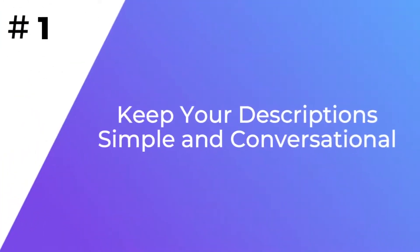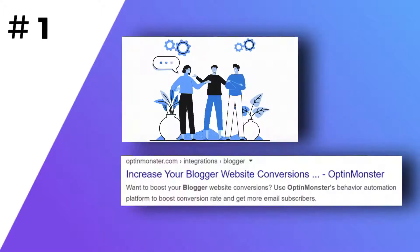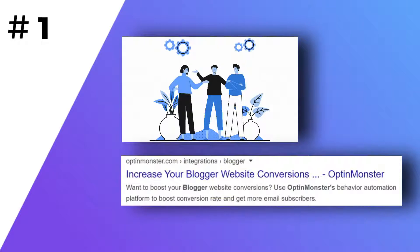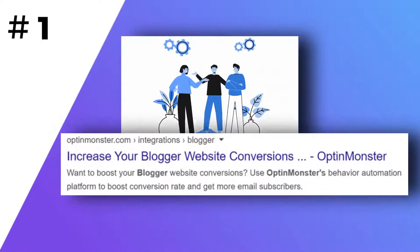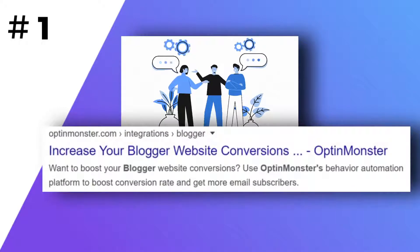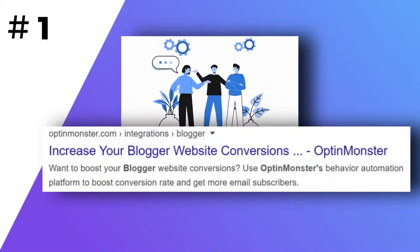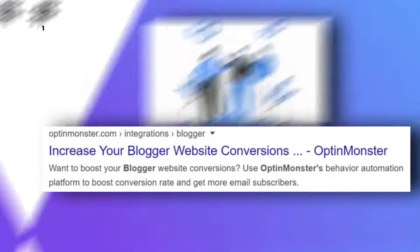Number one: keep your description simple and conversational. Keep in mind that you're writing meta-descriptions for people and not for search engines, so keep them conversational and use natural language so anyone can easily understand and click on your link. Consider this meta-description example by OptinMonster — it asks a question at the start to keep it conversational and provides a simple explanation of what you can expect if you click on the link.